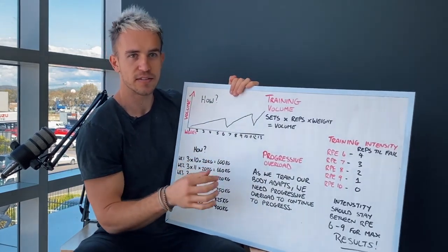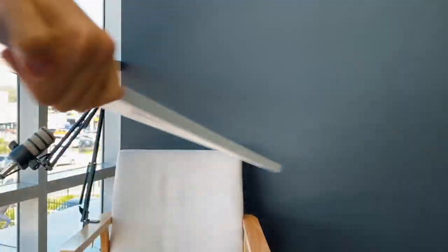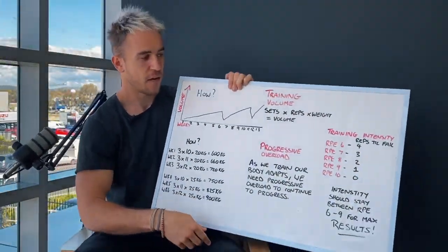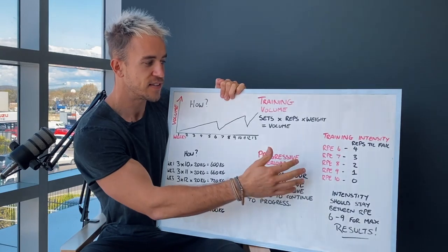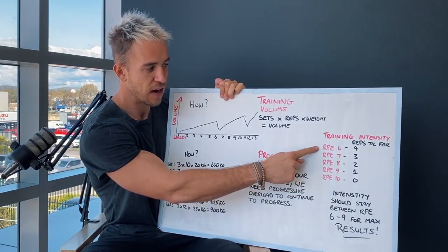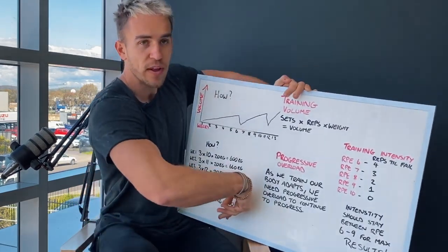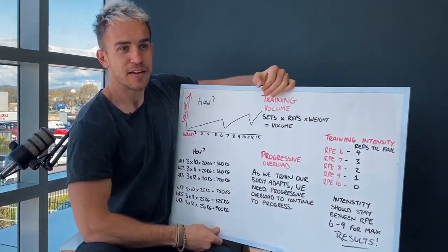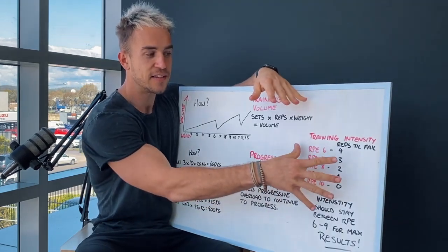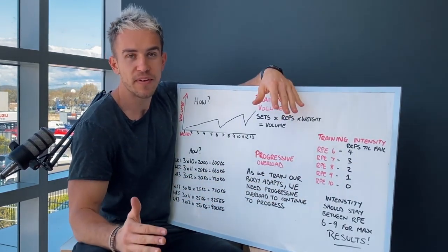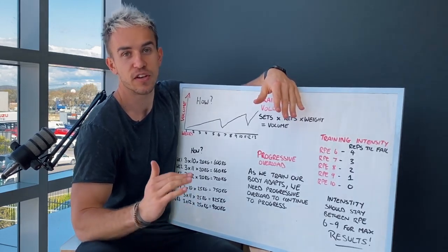And then we're talking about here was the training intensity. Now with training intensity, you can see here we have up here 6, 7, 8, 9 and 10. Now this is the sweet spot for our training. Now if you're not training in this rep range, in this RPE range here, your training will not be effective and you're not going to get the results that you're after.